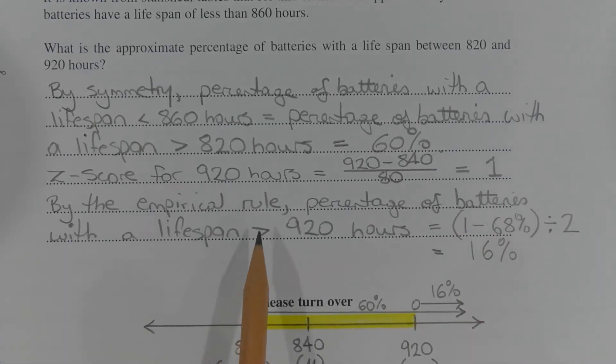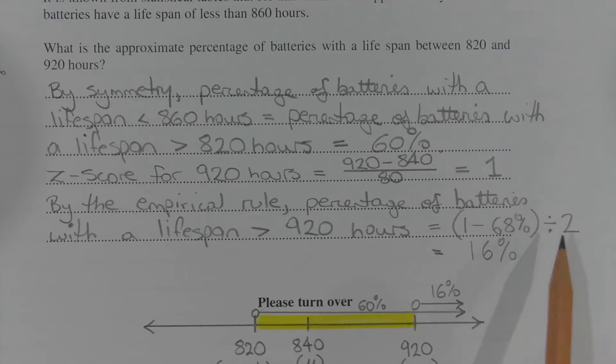By the empirical rule, the percentage of batteries with a lifespan greater than 920 hours is equal to 1 minus 68% divided by 2, which equals 16%. Now this comes from the fact that we're dealing with an area under the normal distribution above a Z-score of 1.